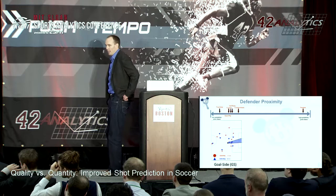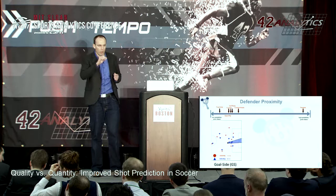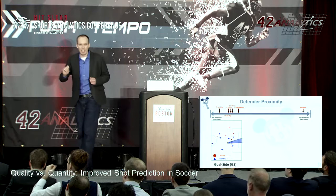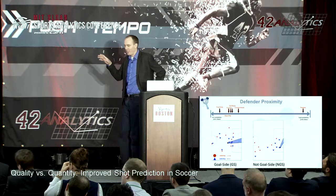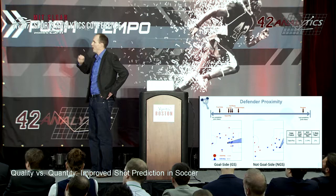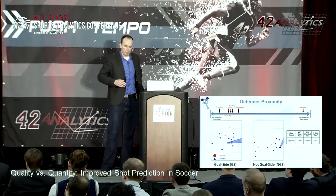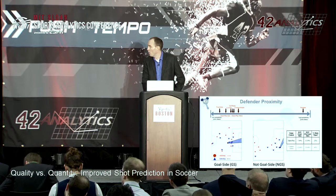Defender proximity is also very important. To encode that, we created an area between the goal and where the ball handler was, then used point-in-polygon to see if a player was in that shaded region. If a defender was in that region, we said they were goal-side. The breakdown is interesting: in open play, when a player is goal-side it's around 7.5%, and when no defender is goal-side it's about 11.5%. That effect is even more pronounced for counter-attacks. More context leads to better predictions.